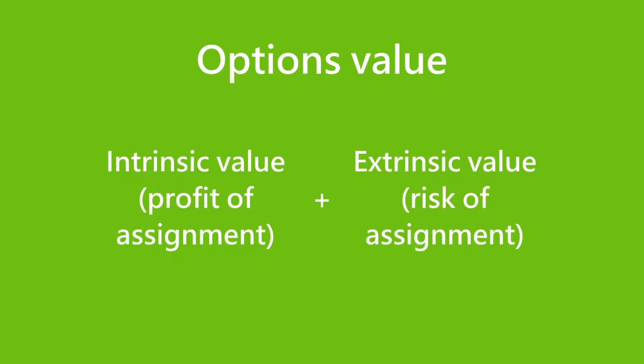How do you calculate options value? Trading options is similar to trading other commodities — you buy low and sell high. Options are tools to hedge against risks, so the price of an option is similar to prices of insurance in that it depends on the value of the risk event and the probability of assignment. The value of an option is the sum of intrinsic value and extrinsic value. The intrinsic value is the profit the option owner gets if the option is assigned right now. If there is no profit to be earned in an assignment, then the intrinsic value is zero.